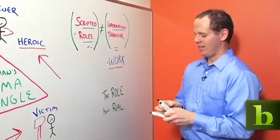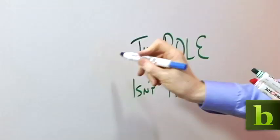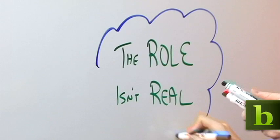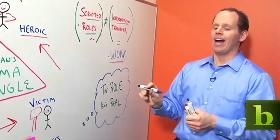So how do we get out of this? The trick is when you notice any of these roles come up, you want to immediately start to think, act, and speak as if the role isn't real.